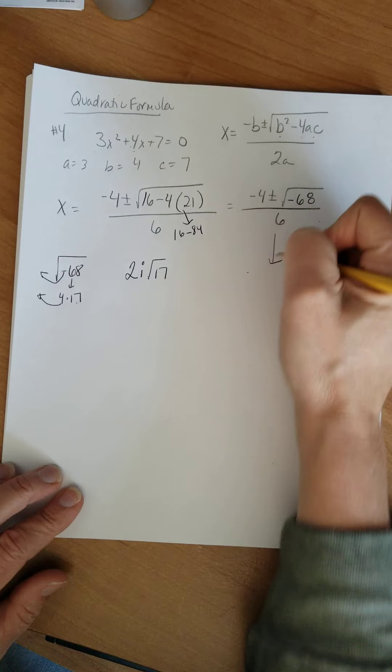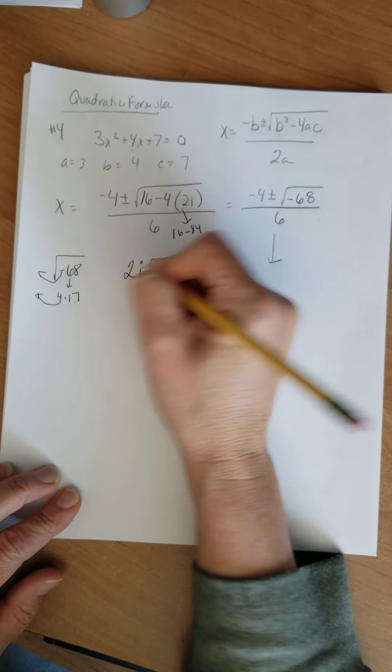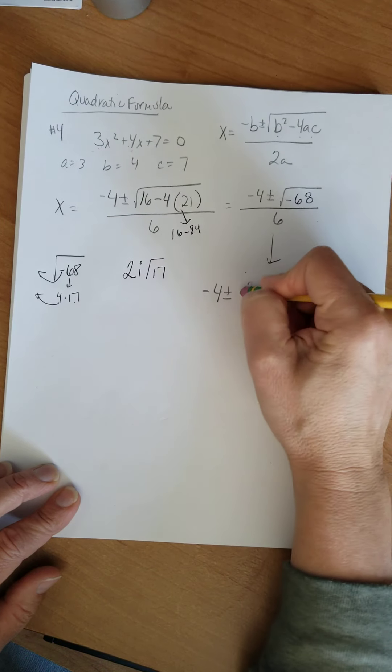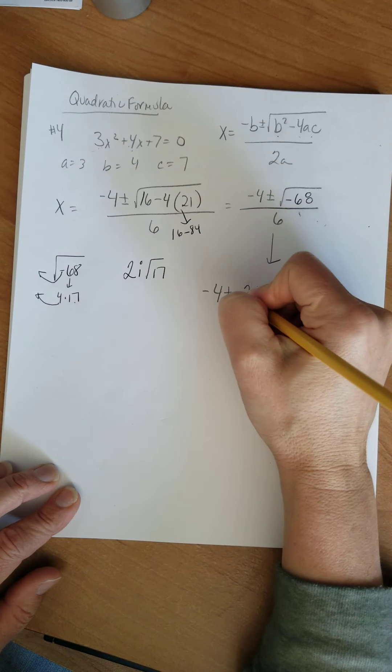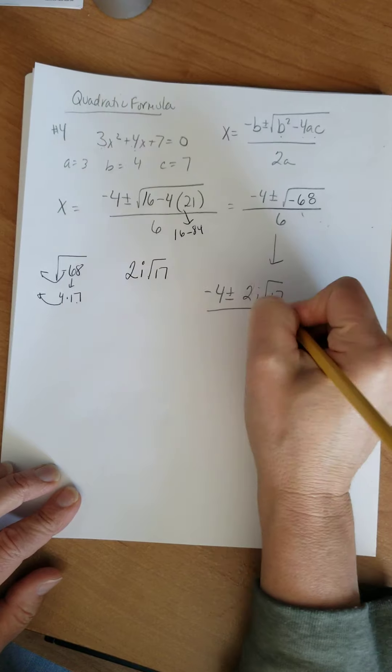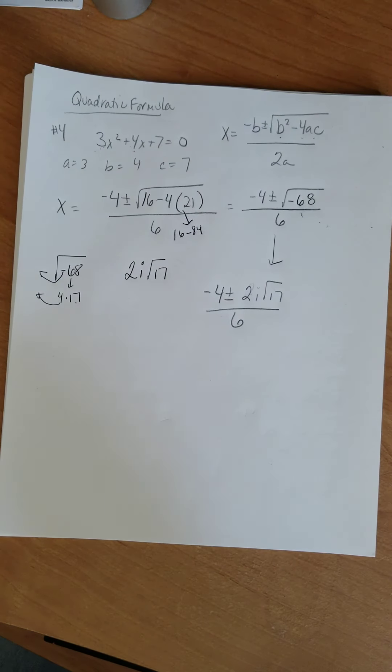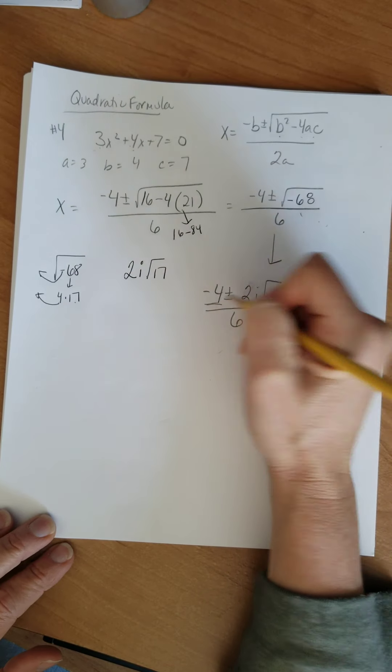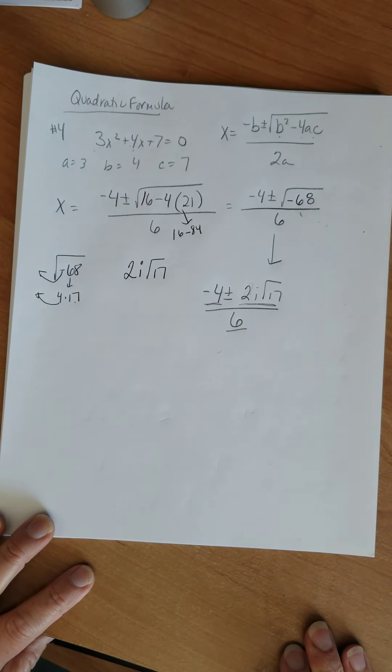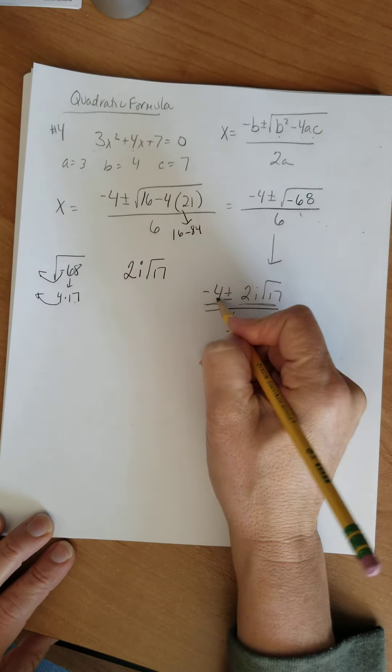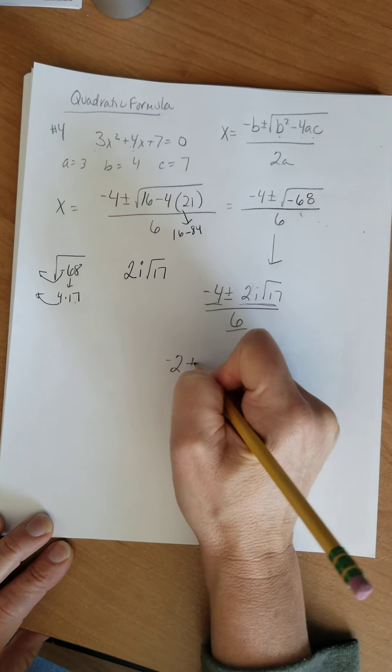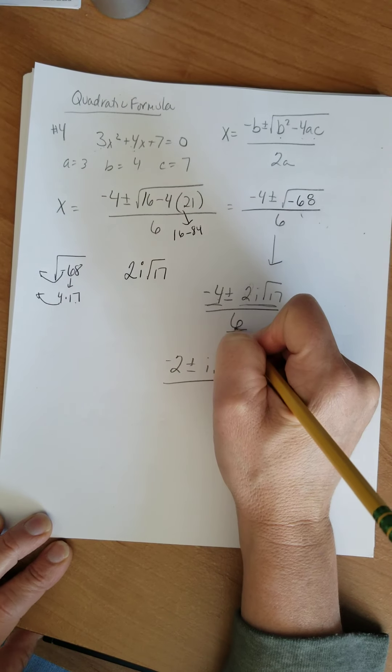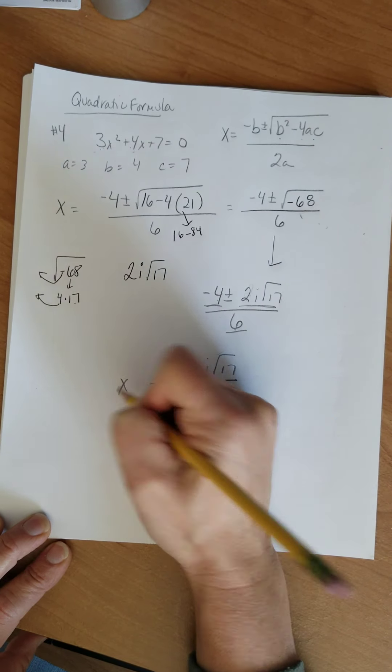All right, so I'm going to bring this down here. This is actually negative 4 plus or minus. The square root of negative 68 is 2i times the square root of 17 all over 6. Now you want to think to yourself, can I simplify this at all? Can I simplify this part, this part, and that part? Does anything go into all those? You betcha, 2 does. 2 goes into negative 4, that's going to go negative 2 plus or minus. This 2 is out, i times the square root of 17 all over. If I take a 2 out of 6, it's 3. That's what your x is.